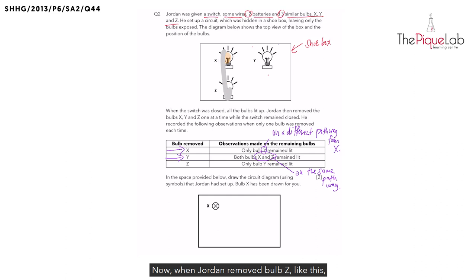Now, when Jordan removed bulb Z like this, he observed bulb Y remain lit. And this confirms our first conclusion that Y was on a different pathway from X and now from bulb Z.